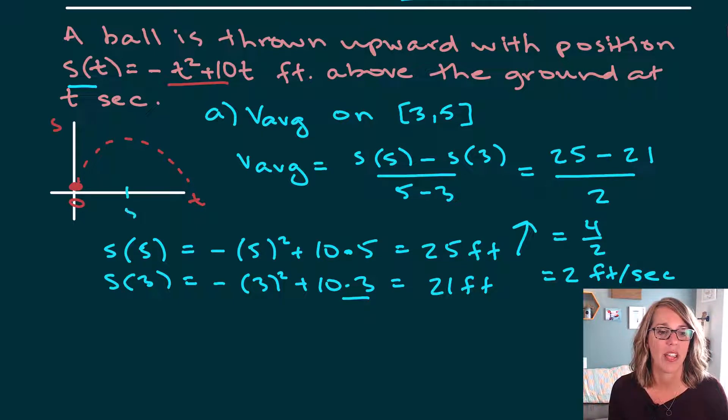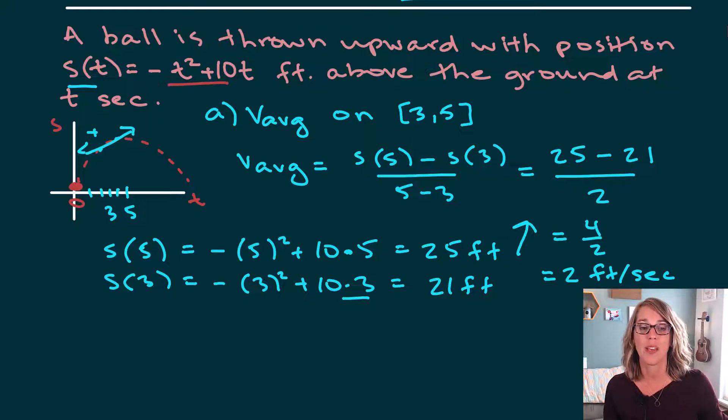Now five happens to be right here. So one, two, three, four, five, three is about here. Notice that between three and five, I do have a slope that is positive, which means that between three and five, it is increasing in height, positive two feet per second.